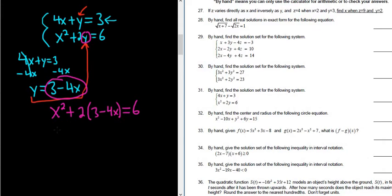All right, let's keep going. We'll distribute the 2 now. So x squared plus, so 2 times 3 is 6. And 2 times negative 4x is negative 8x. And all of this is equal to 6.